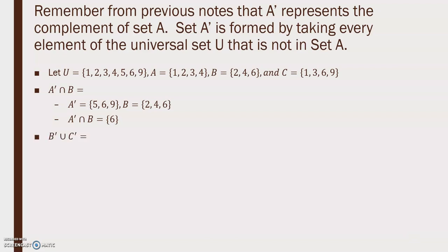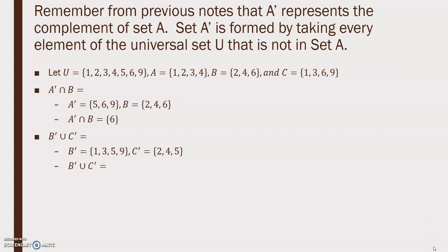Find B' union C'. First find B' and C'. B' = {1, 3, 5, 9} and C' = {2, 4, 5}. Unioning those sets gives {1, 2, 3, 4, 5, 9}.